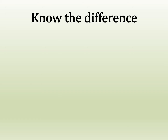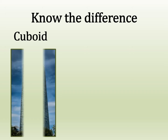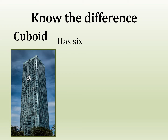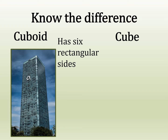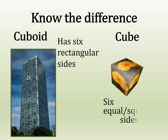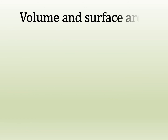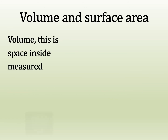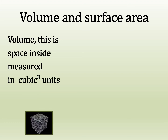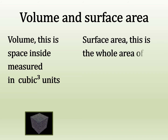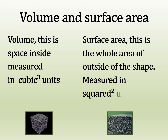We need to know the difference between a cuboid and a cube. A cuboid has six rectangular sides, and a cube has six equal square sides. Volume is the space inside, measured in cubic units. Surface area is the whole area of the outside of the shape, measured in squared units.